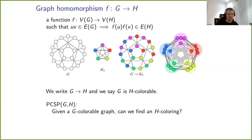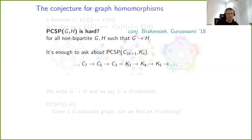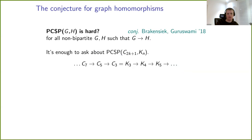PCSP(G,H) for graphs G and H is the following problem: given a G-colorable graph, can we at least find an H-coloring? We assume always that G has a homomorphism to H, so G-colorability is stronger and H-colorability is weaker. The conjecture here is that all non-trivial cases are NP-hard. The trivial cases are when G or H is bipartite, or when one of them has a loop — all other cases we conjecture to be NP-hard.